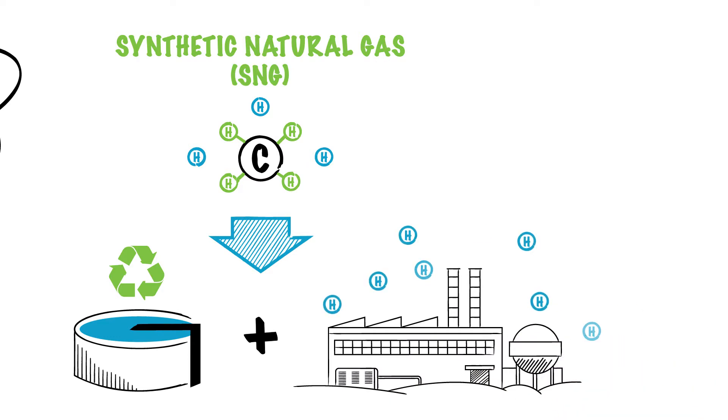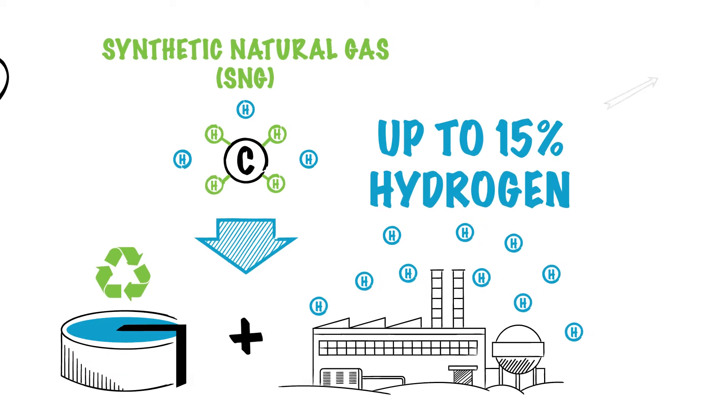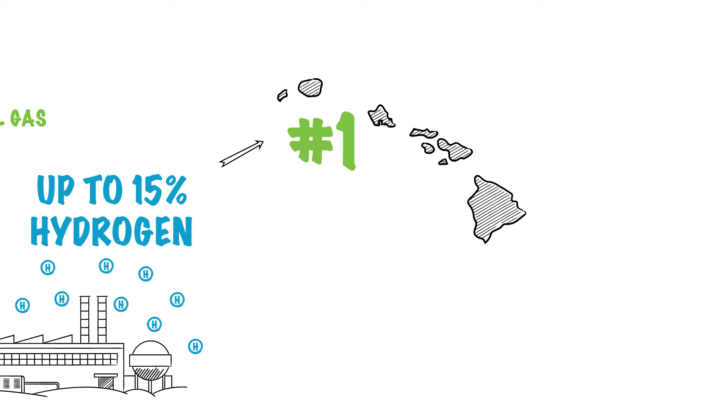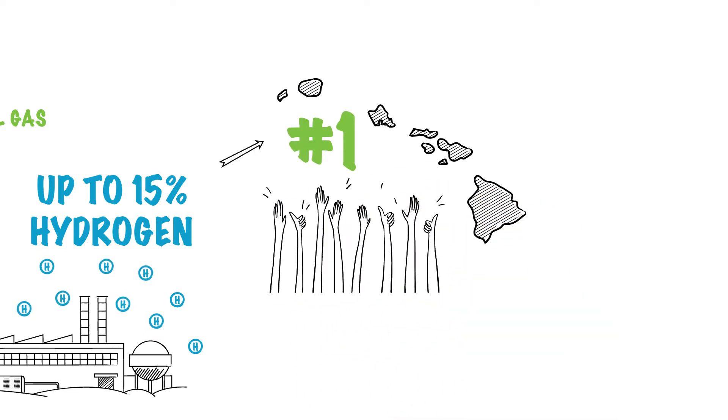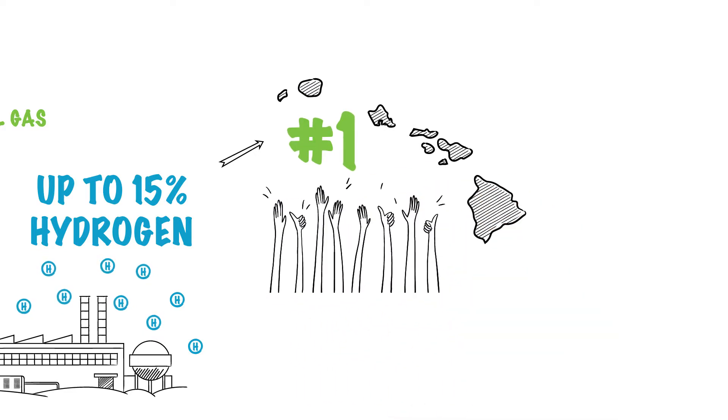This process also creates hydrogen and our customers receive a mix of natural gas and up to 15% hydrogen. That's the most hydrogen in any utility in the United States and Hawaii Gas has been leading the nation since the 1970s.